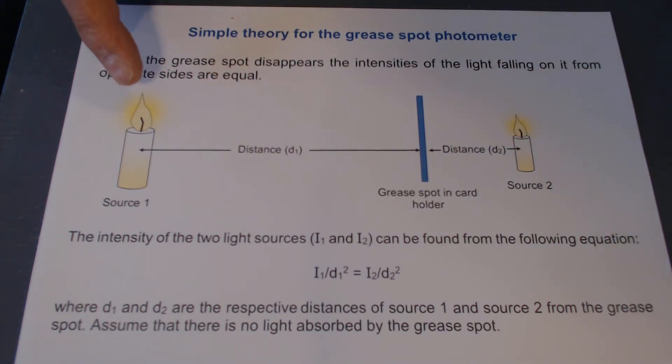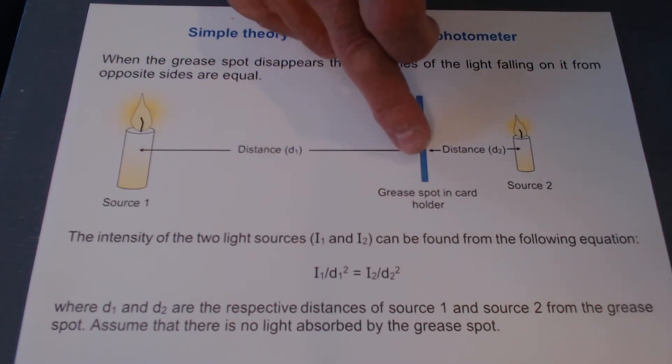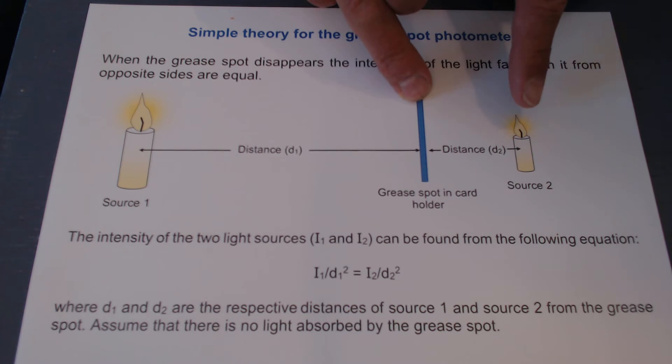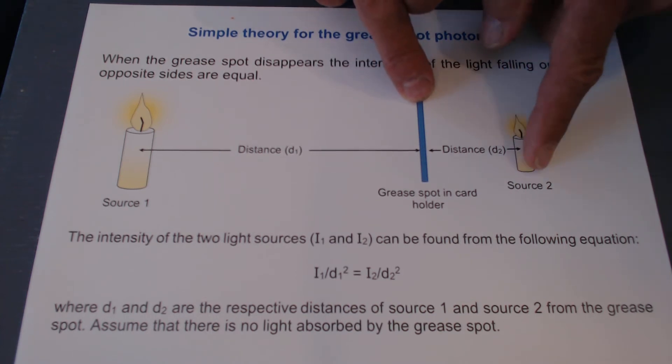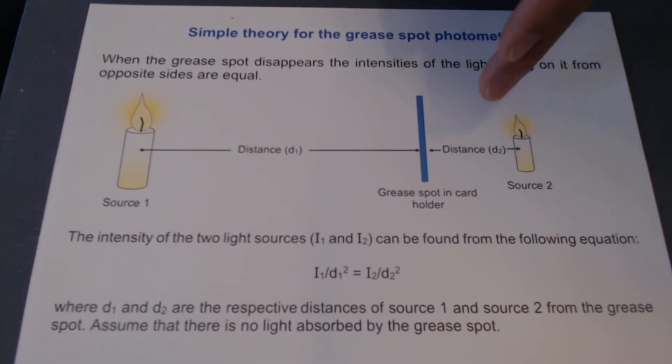Now one of them you take the standard source, let's assume that's source 1, and you put that at a fixed distance d1 from the grease spot. The second source, source 2, is then moved until the grease spot disappears in comparison with the surrounding white paper.